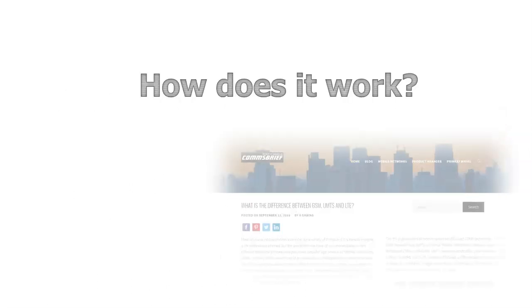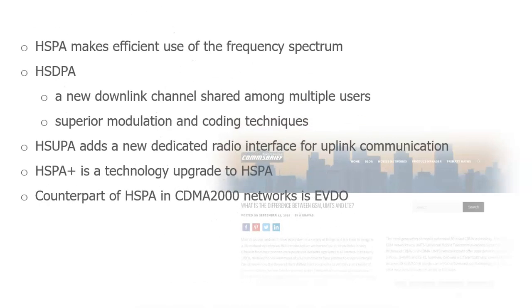Let's now have a look at how HSPA works. HSPA makes efficient use of the frequency spectrum through better modulation techniques and retransmission intervals. HSDPA adds a new high speed channel in the downlink that is shared among multiple users. It employs superior modulation and coding techniques and uses faster retransmission of erroneous packets.